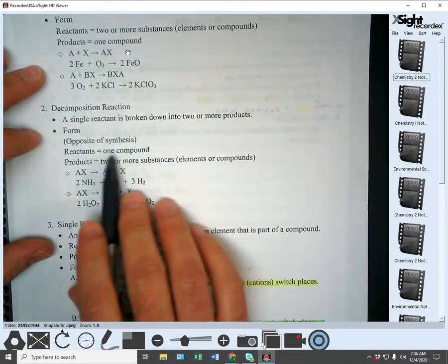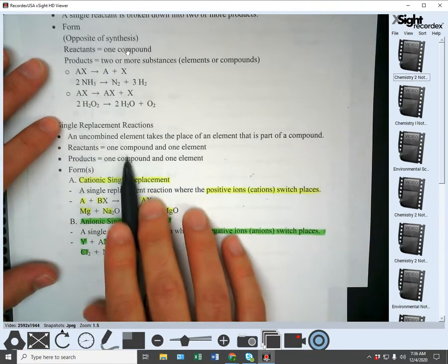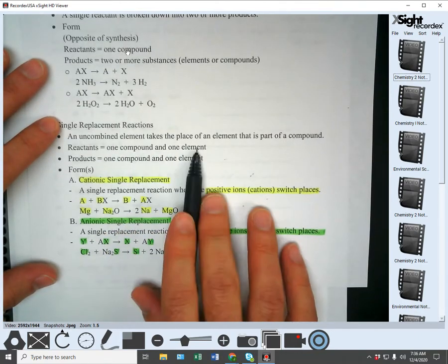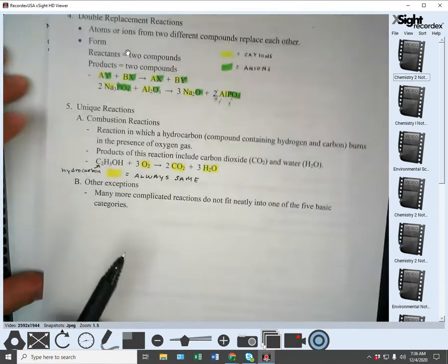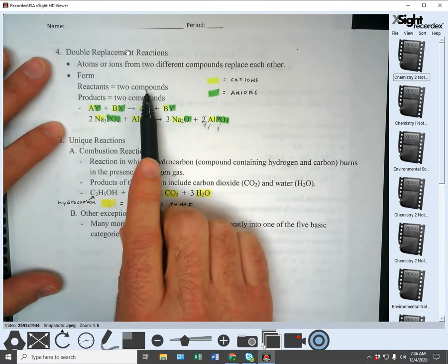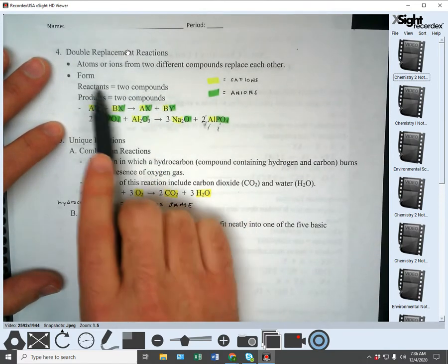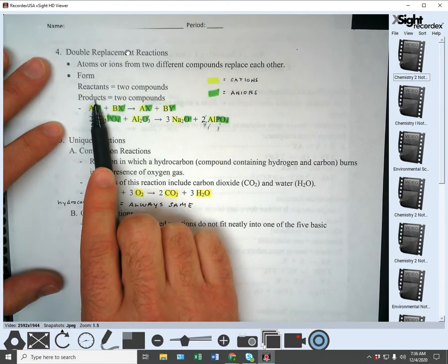No, no, that is one compound there. Single replacement has one compound, one element can't be that. So double replacement is the only one that has two compounds on both sides, reactants and products. So it must be a double replacement.